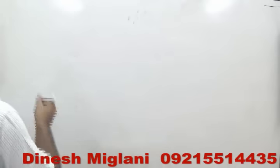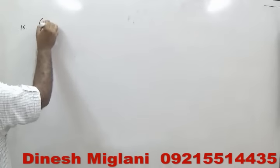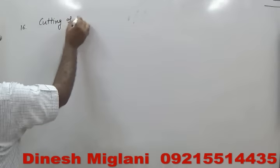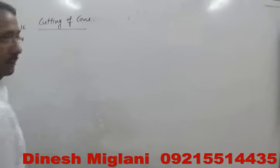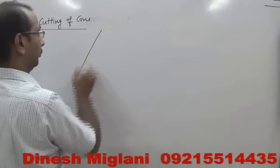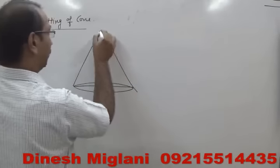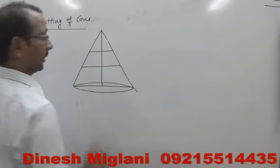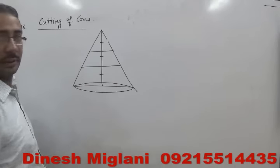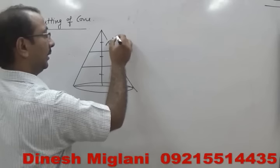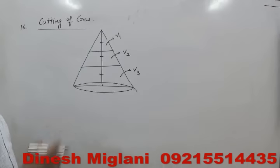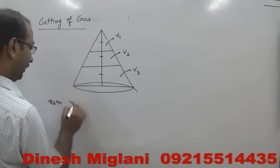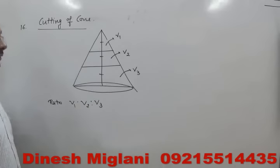Let us start with question number 16, named as cutting of a cone. Suppose one cone is given to you, and it is given that parallel to the base two cuts have been made dividing the height into three equal parts. The three portions have volumes V1, V2, and V3, and we have to find the ratio V1 : V2 : V3.